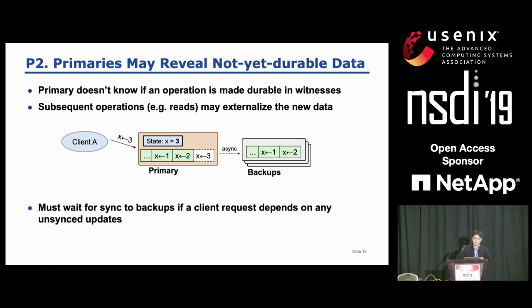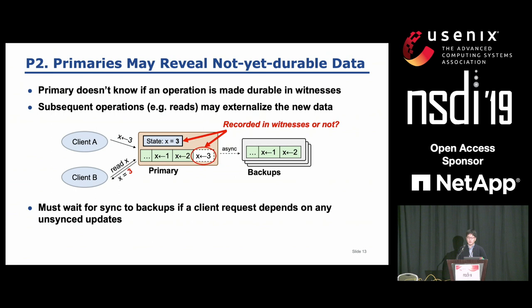The second potential issue is that a primary node may reveal data that is not yet durable. For example, a primary completes assigning 3 to X and responds to client A before syncing to backups. Client A completes the operation by replicating to witnesses. But even then, neither the primary nor other clients can tell whether the operation is made durable in witnesses. So when another client, client B, reads the new value of 3, the returned value can be lost if the primary crashes. So to ensure the durability of the returned value, a primary must wait for the replication to backups before returning the read value.